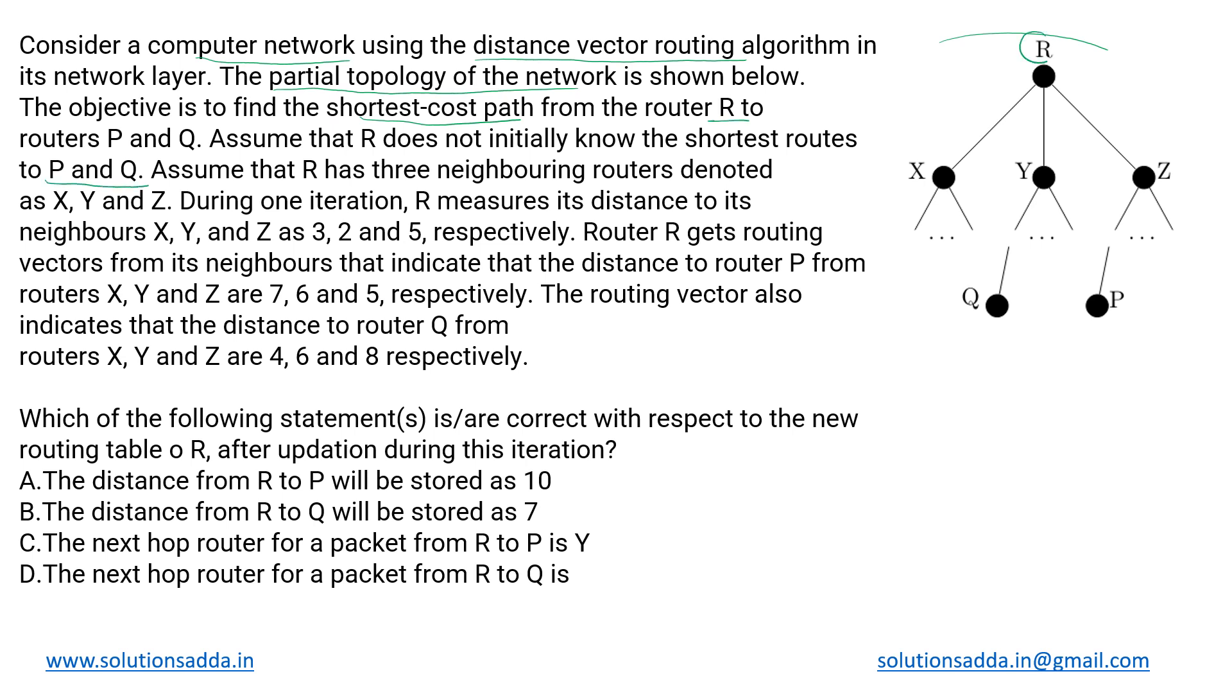We are having R here at the uppermost level and at the bottom we have these two hosts P and Q. The entire topology is not given. In the middle there can be multiple nodes that we are not concerned with. We have to assume that R has three neighboring routers denoted as X, Y and Z.